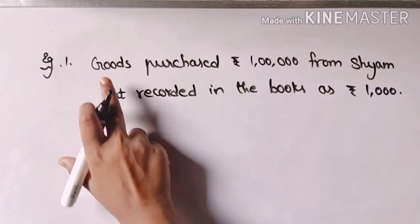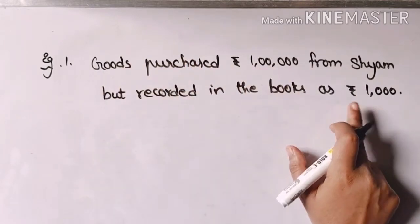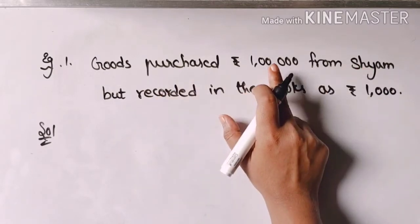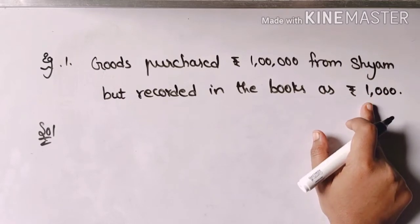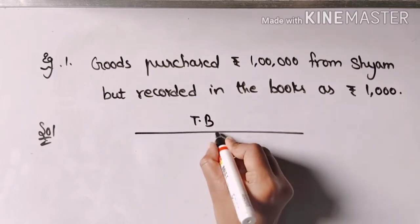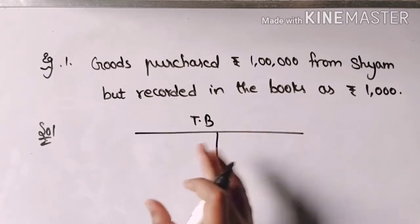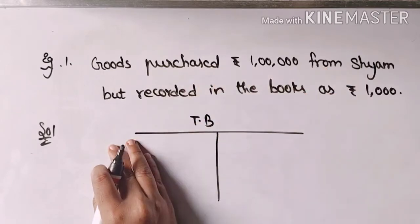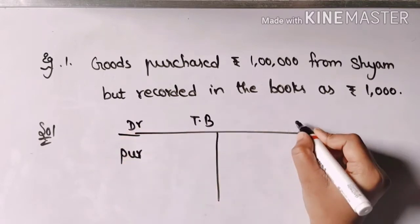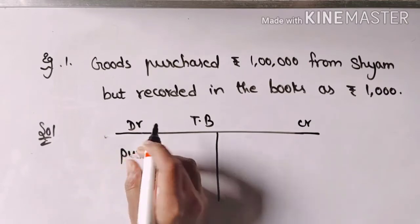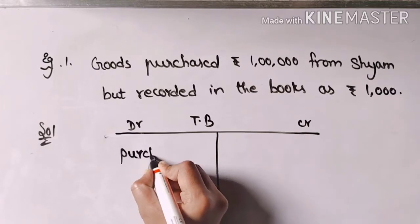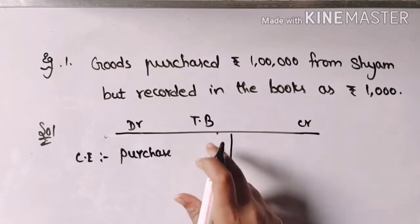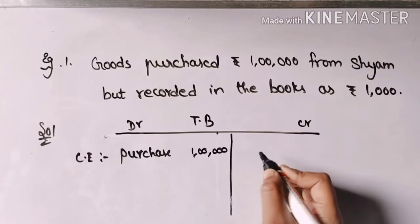The first error: goods purchased rupees one lakh from Sham, but recorded in the books as rupees one thousand. To rectify this, draw an extract of the trial balance with debit and credit columns. The correct entry for goods purchased from Sham is: Purchases Account debit to Sham Account — rupees one lakh. That is the correct entry, and the purchase account should show one lakh in the debit column.